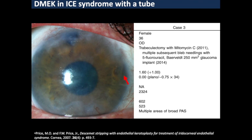The first challenging endothelial keratoplasty case is a 36-year-old female with ICE syndrome who has had multiple previous glaucoma procedures, has corneal decompensation following implantation of a Baerveldt tube, and has a significant degree of peripheral anterior synechiae. Because she is only 36, I felt the best procedure would be DMEK. The Price group has published that DSAEK results in iridocorneal endothelial syndrome are poor in the long term, so DMEK might provide a better long-term prognosis.